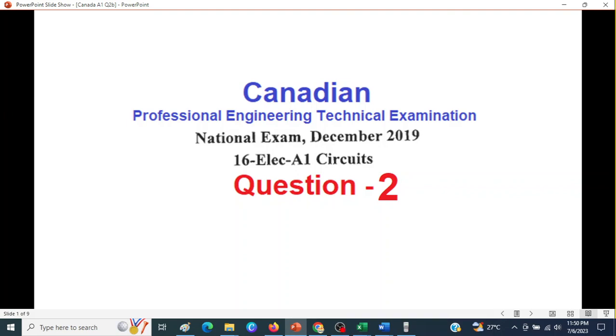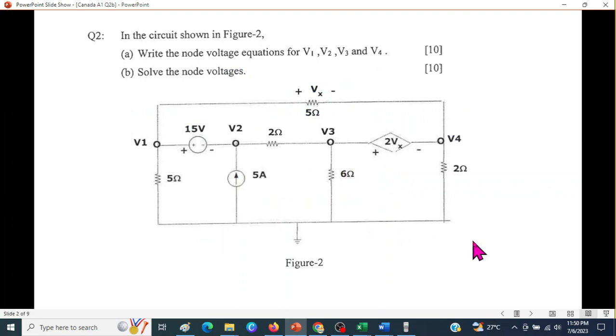Today, we will be solving the second question of December 2019 exam for Canadian Professional Engineering Technical Exam. Here is the question. Two parts. Write the node voltage equation for V1, V2, V3, and V4, and then solve the node voltage equation. On every exam, one or two questions are given which are time-consuming, and some students get involved and they waste their time. So this is one of those questions. This is very, very time-consuming. So if you have a choice, you should avoid this question. But anyway, we will do it.